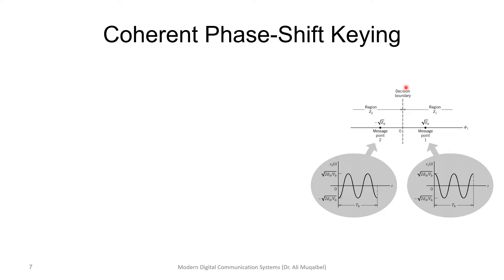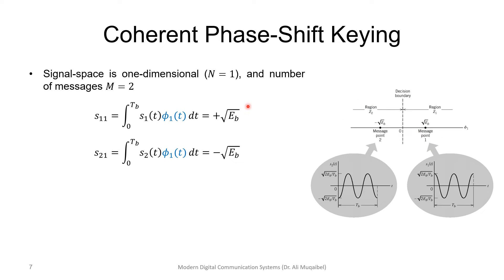If you look at the diagram, again, on the right, it is the reproduction of the constellation diagram. So, we know we can also represent how much of the signal is in phi 1 at the receiver side. You get S11 or S21, which means how much of the signal is represented. If there is no noise, you get square root of Eb, the energy.